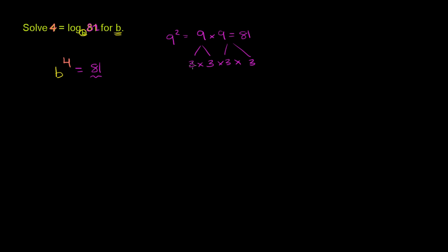That will also equal 81. And we can verify it: 3 times 3 is 9, 9 times 3 is 27, 27 times 3 is 81. So this is 3 to the fourth power.